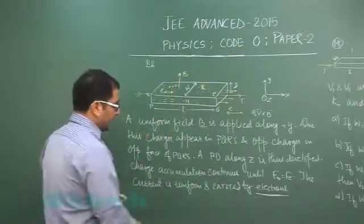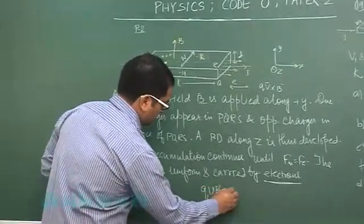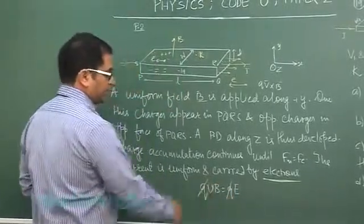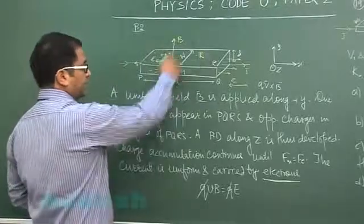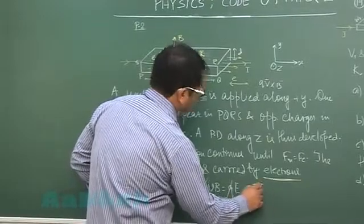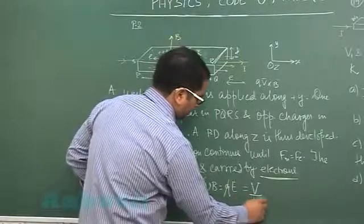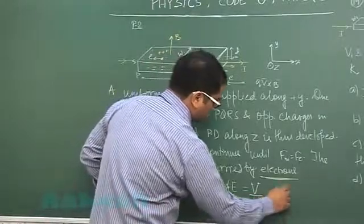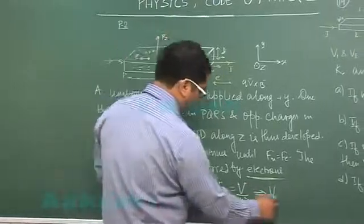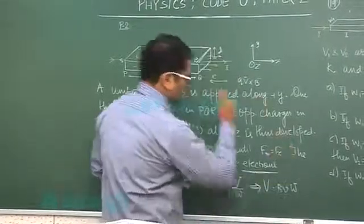But when that happens you could see easily we can calculate that QVB would be equals to QE. Q gets cancelled, V is of course the velocity. Electric field in this direction can always be written as capital V potential difference by distance along this direction, and that is W. So from here we could make the conclusion that the potential difference would be obviously BV multiplied by W.